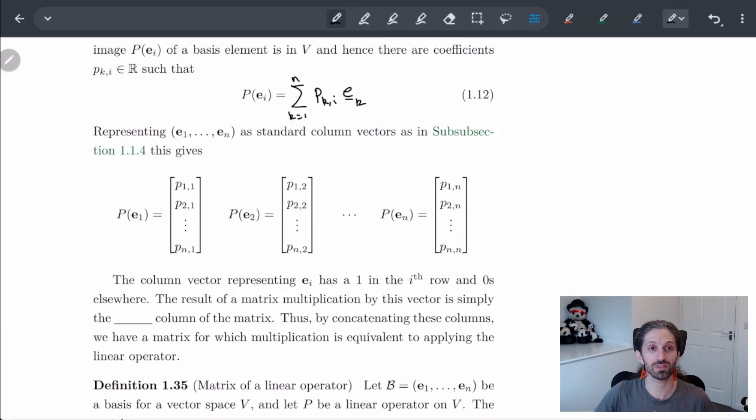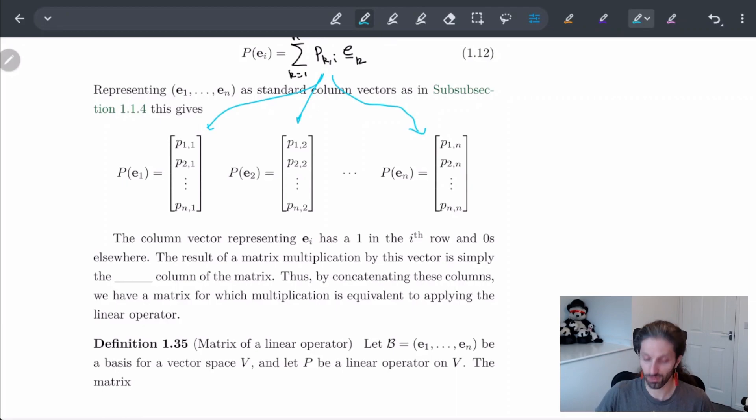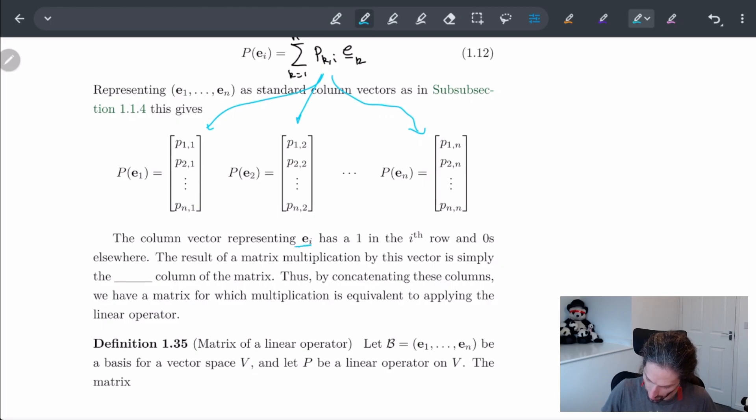And what this gives us is it allows us to convert this into a matrix using column vectors. So each of these will have its own column vector associated to it. The column vector which represents E_i is just going to be a one in the ith row and zeros elsewhere. So E_i is going to be represented by zero, zero, one, zero, zero, where the one is in the ith row.